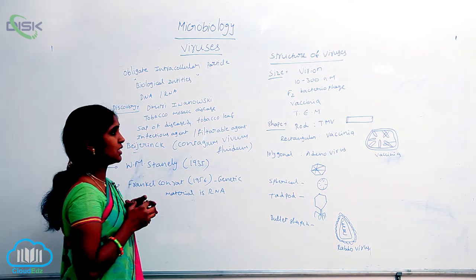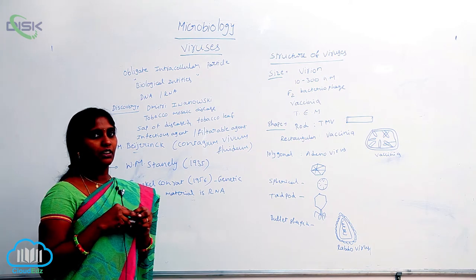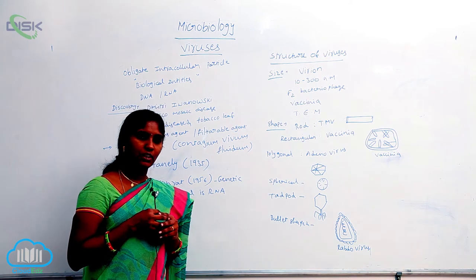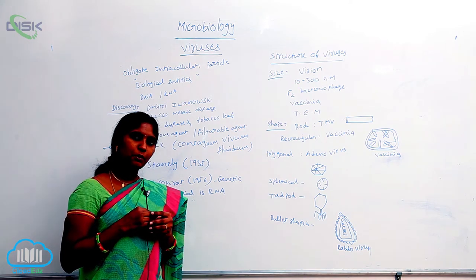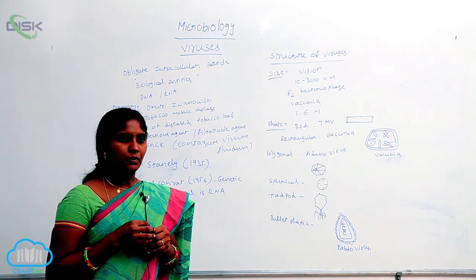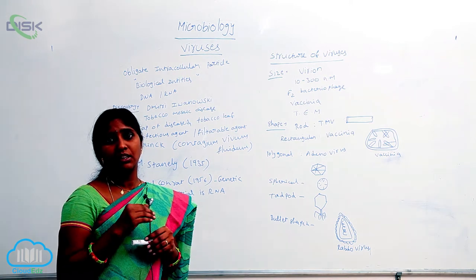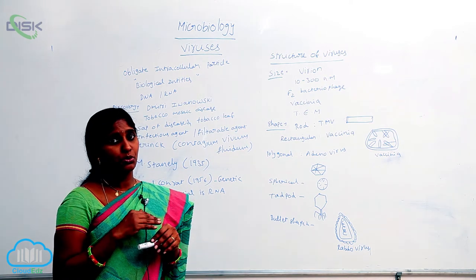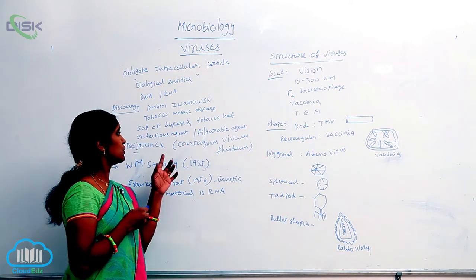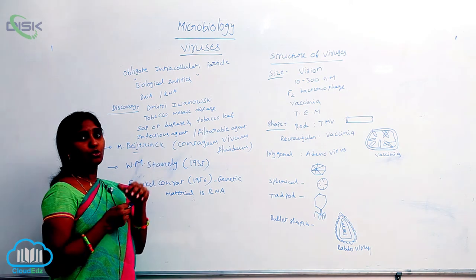He collected the sap of the diseased tobacco leaves, then filtered it using special filters. These filters measure approximately in micrometers — they trap bacteria, not allowing bacteria to pass through during filtration of the sap.